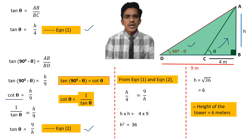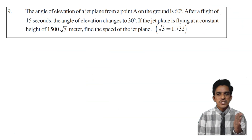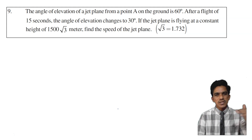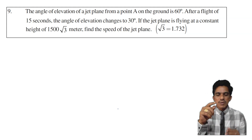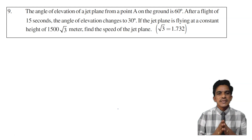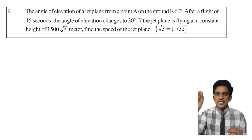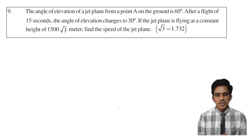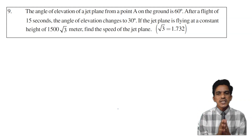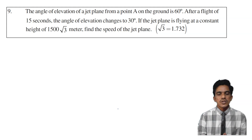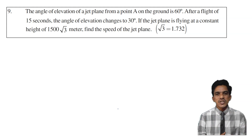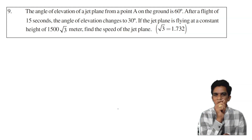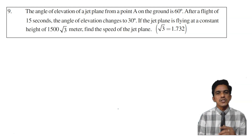Now let us look at the last problem of the exercise, question number 9. The angle of elevation of a jet plane from a point A on the ground is 60 degrees. After a flight of 15 seconds, the angle of elevation changes to 30 degrees. If the jet plane is flying at a constant height of 1500 root 3 meters, find the speed of the jet plane. We are also given root 3 is equal to 1.732. From physics, we know that speed equals distance by time.